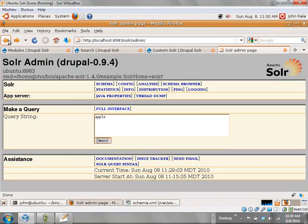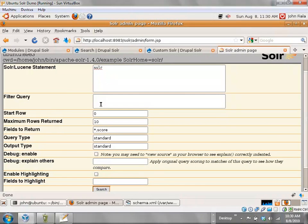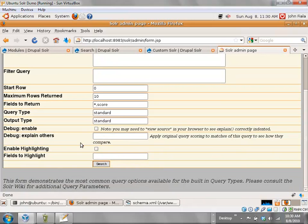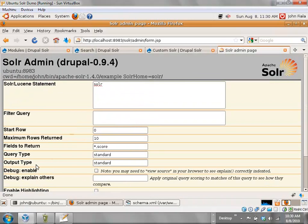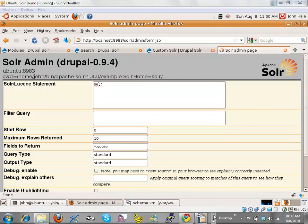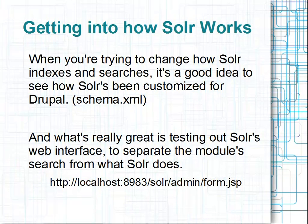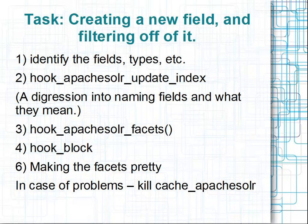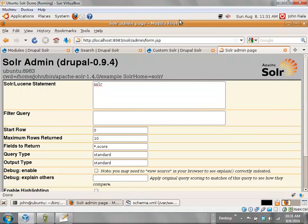On the previous page you can go in and there's a full interface where you can put down all the bits to see what's going on. Playing around with this will really help you figure out how to get everything working with your code. So let's say you've got a new field such as the URL of your feeds — information you're pulling off a feed and want to put into Solr for searching. You've got to take the fields you need, decide what types they're going to be, and then go into hook_apache_solr_update_index.